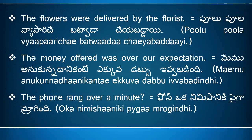'The flowers were delivered by the florist' means 'pulu, pulavya pariche, batwada chayabaddai.' Here, 'flowers' means 'pulu,' 'were delivered' means 'batwada chayabaddai.' 'The money offered was over our expectation' means 'meemu anukunna dhani kante ekkuva dabbu yivvabadindhi.' Here, 'money' means 'dabbu,' 'offered' means 'yivvabadindhi,' and 'over our expectation' means 'meemu anukunna dhani kante.'